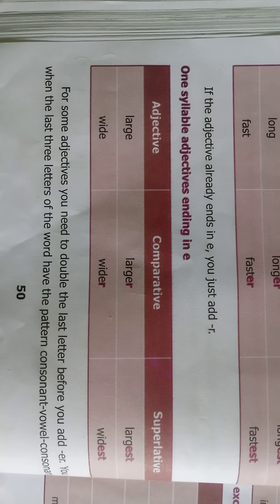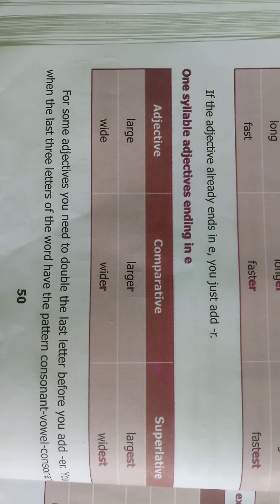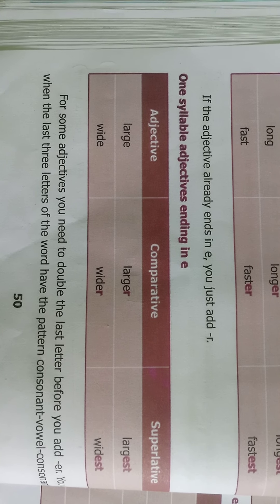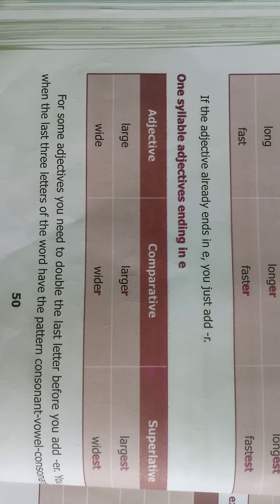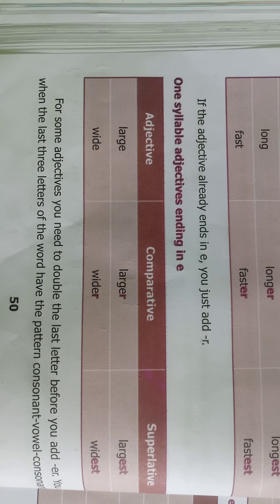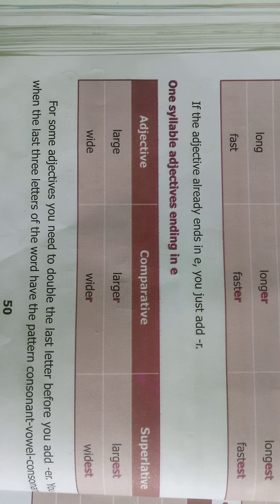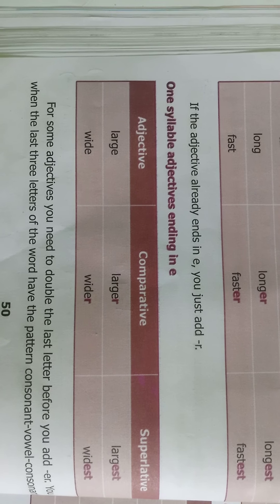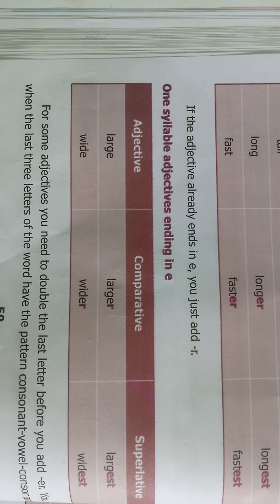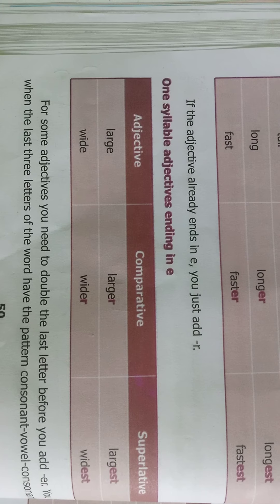One syllable adjectives ending in 'e': we add 'r' to make it comparative and 'st' to make it superlative. Look at the examples: large, larger, largest; wide, wider, widest.